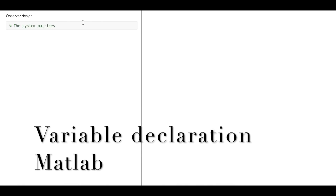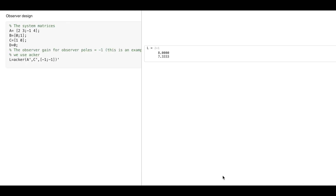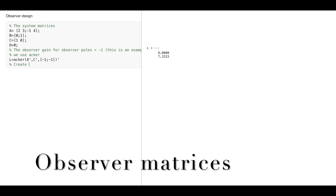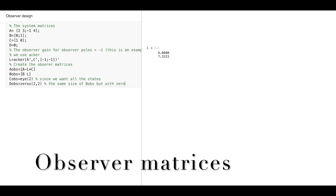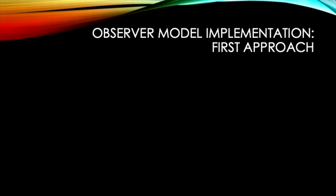For variable declaration, I will put matrices A, B, C, and D into a MATLAB script. To find L, I will use the ACKER function with two arbitrary observer poles. Then I will construct matrices A_obs, B_obs, and C_obs, using identity to obtain the estimated state, and D_obs of the same size as B_obs but with zeros. Running everything gives the result.